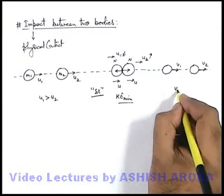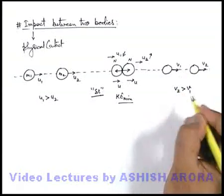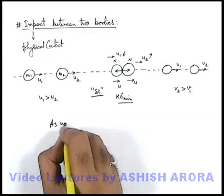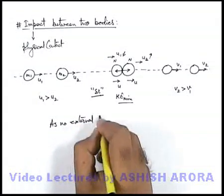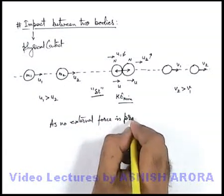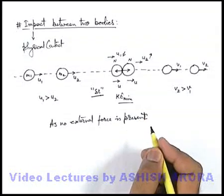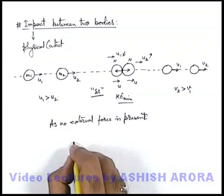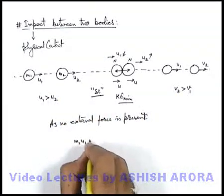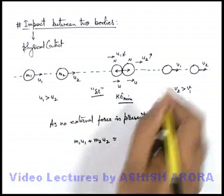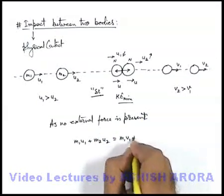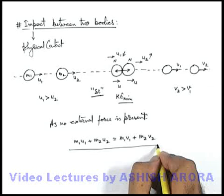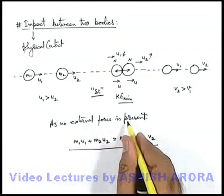And finally the speed of the second ball will be more than that of the first ball. Now as we can state, as no external force is present, the total momentum of system will remain conserved. So throughout the process of collision, momentum remains conserved. Initial momentum was m1u1 plus m2u2, and the final momentum can be written as m1v1 plus m2v2. Just be careful about conservation of momentum, which will always hold whenever no external force is present.